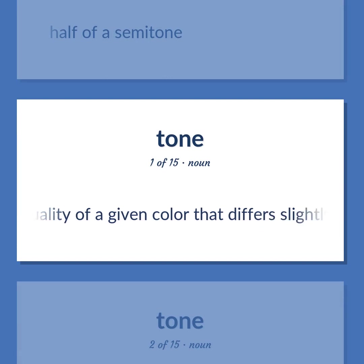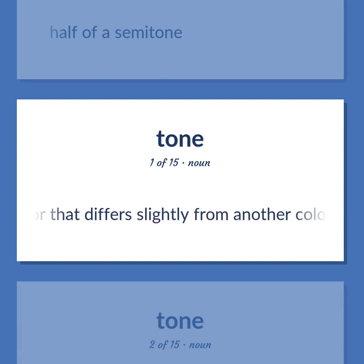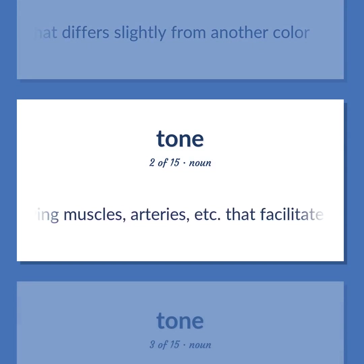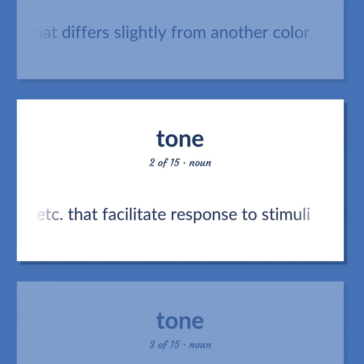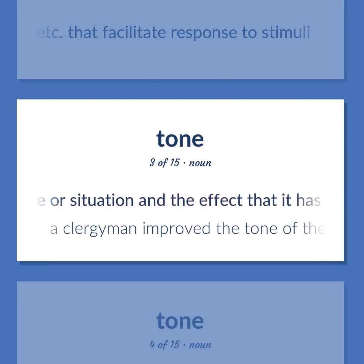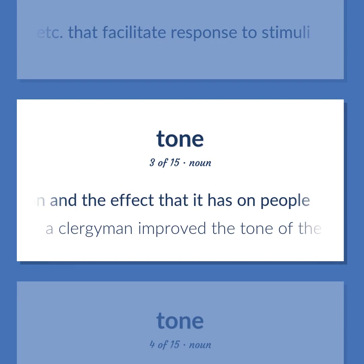A quality of a given color that differs slightly from another color. Tone: the elastic tension of living muscles, arteries, etc., that facilitate response to stimuli. The general atmosphere of a place or situation and the effect that it has on people. A clergyman improved the tone of the meeting.